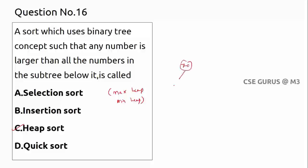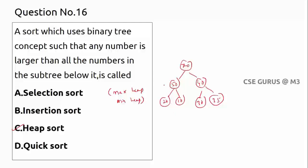For example, take 70 at root, 50 and 40 as children, then 20, 10, 30, 35 as further descendants. For 70, all descendants are less. For 50, its descendants are less. For 40, its descendants are less. This is called a max heap.